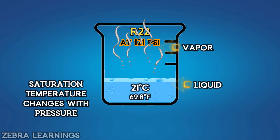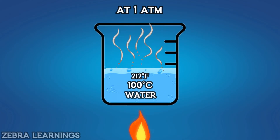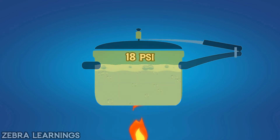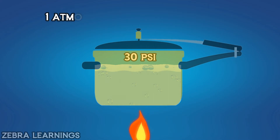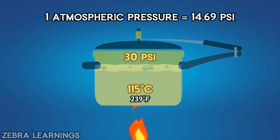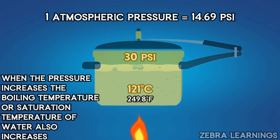Saturation temperature changes with pressure. For example, water heated to 100 degrees Celsius at atmospheric pressure will start boiling. But when water is heated in a pressure cooker, the pressure inside increases — up to 15 PSI higher than normal atmospheric pressure, almost 2 atmospheric pressure. At this pressure, water does not boil at 100 degrees Celsius; it only boils when heated up to 121 degrees Celsius. So when pressure increases, the saturation temperature also increases.